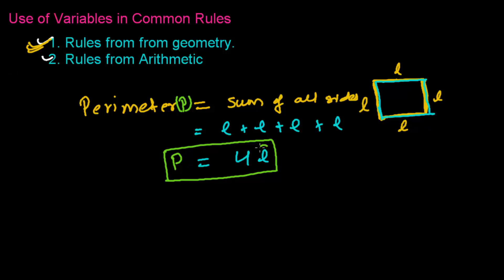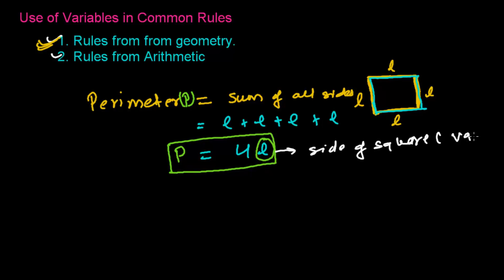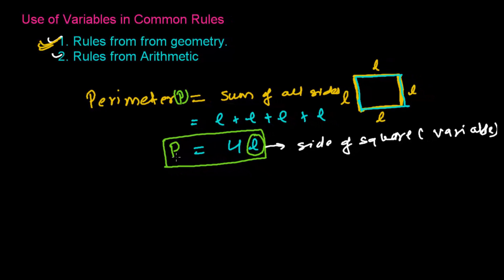Keep in mind that L is the side of the square, which is a variable. This L is going to determine the size of the perimeter — how much perimeter you get depends on this length. Whatever measurement you have, just multiply it by 4 and you'll get the perimeter. Here I've represented the perimeter as a variable P as well, because the perimeter also changes. If the square changes, the perimeter changes and so does the length. So P and L are both variables.